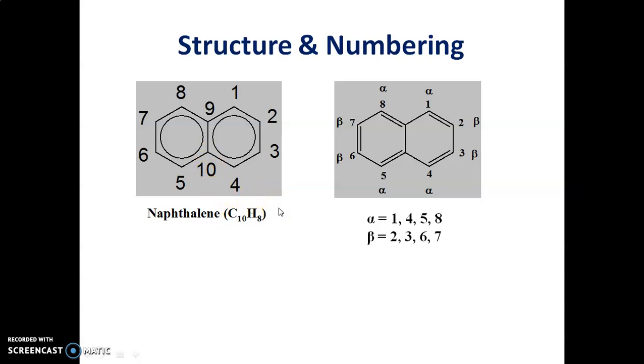About the numbering of naphthalene, we can start the numbering from this position in a clockwise fashion. This position gets number 1, 2, 3, 4, 5, 6, 7, 8 and the point of contacts gets the position number 9 and 10.